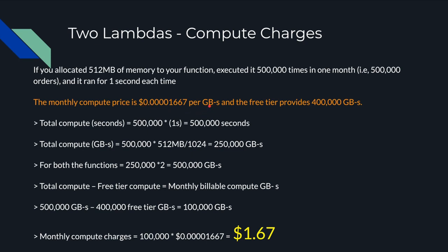The price per GB-second is $0.0001667. To calculate GB-seconds: 500,000 executions × 1 second = 500,000 compute seconds. Then, 500,000 × 512 MB ÷ 1024 = 250,000 GB-seconds per function. We have two Lambda functions executing one after the other, so 250,000 × 2 = 500,000 GB-seconds. Deducting the free tier of 400,000 GB-seconds leaves 100,000 GB-seconds. Multiplying by $0.0001667 gives $1.67 for Lambda compute charges.